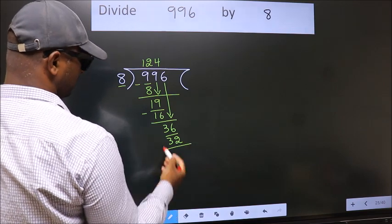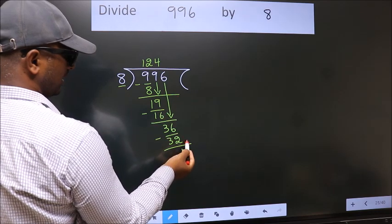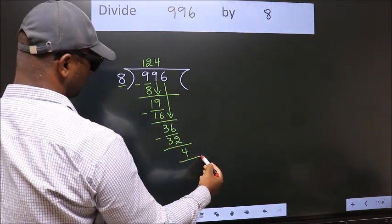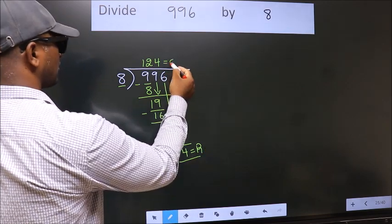Now, we subtract. We get 4. No more numbers to bring it down. So, we stop here. This is our remainder. This is our quotient.